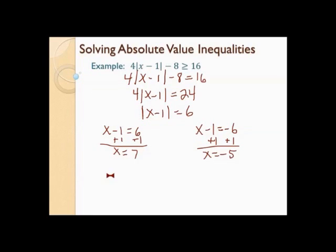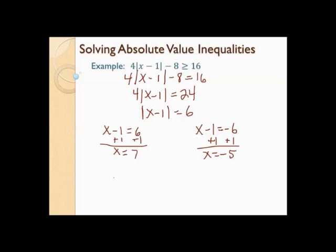Now put those on a number line. There's negative 5, there's positive 7, and I'll put 0 on there. Let's pick a number between the two points — let's pick 1 and plug it in. One minus 1 is 0, absolute value of 0 is 0, 4 times 0 is 0, minus 8 is negative 8. But negative 8 is not greater than or equal to 16 — it doesn't work. So it's going to be an 'or.'